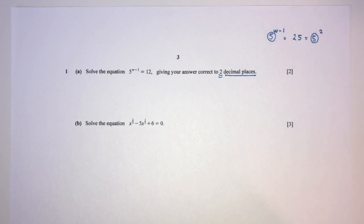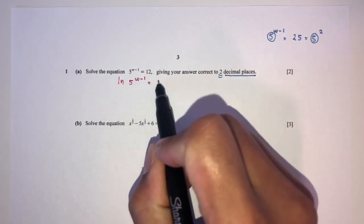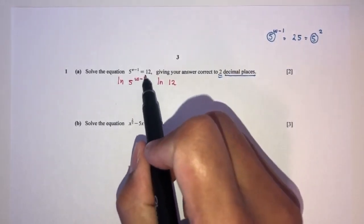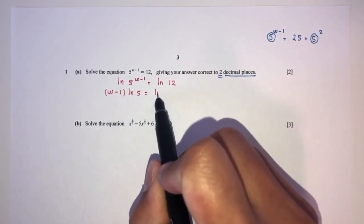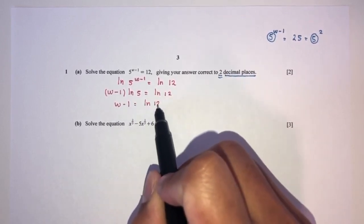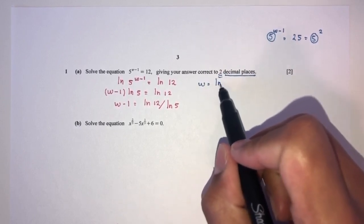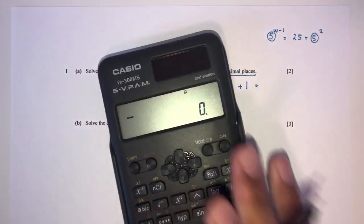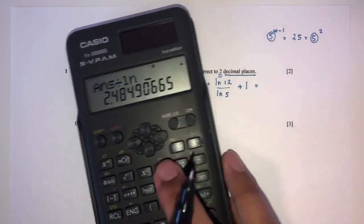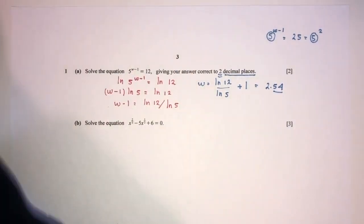I can apply ln on both sides: ln of 5 to the power (w minus 1) equals ln of 12. By the laws of logarithms, I bring the exponent to the front: (w minus 1) times ln 5 equals ln 12. So w minus 1 equals ln 12 divided by ln 5. Finally, w equals (ln 12 / ln 5) plus 1, which equals 2.54 correct to 2 decimal places.